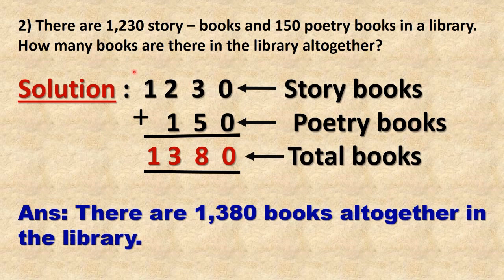Second example: There are 1,230 story books and 150 poetry books in a library. How many books are there in the library altogether? The information given to us: 1,230 story books and 150 poetry books.